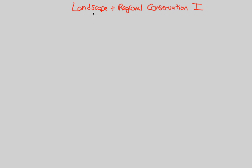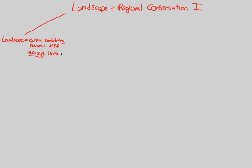To begin, we're going to look at the landscape side of this story, and we first have to define what a landscape is. A landscape is an area containing several different ecosystems linked by exchange of energy, matter, or organisms. The key here is those several different ecosystems and the exchange between them.